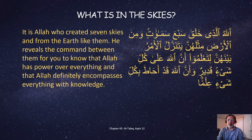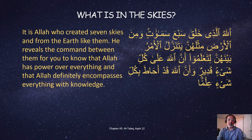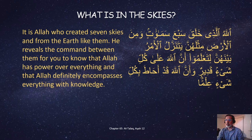It is Allah who created seven skies and from the earth like them. He reveals the command between them, for you to know that Allah has power over everything, and that Allah definitely encompasses everything with knowledge. So the point to take from here is Allah has created seven skies, and from the earth, similar in number — that is seven earth-like objects. He encompasses everything with knowledge — not magic and miracles. So what are these seven earth-like objects in the sky?